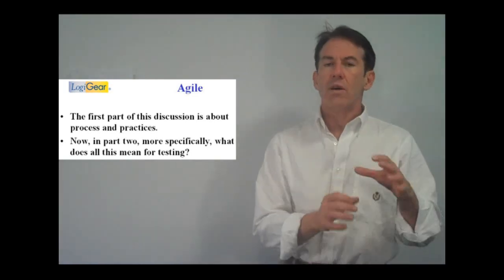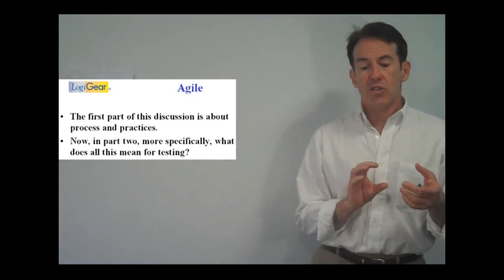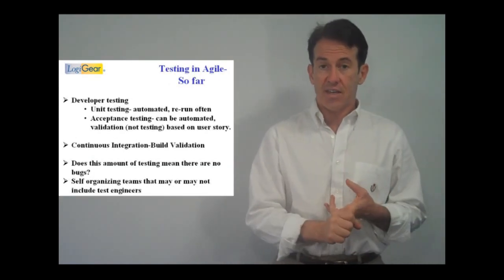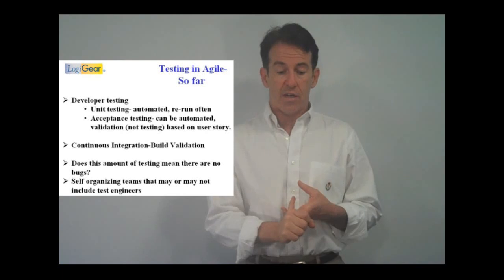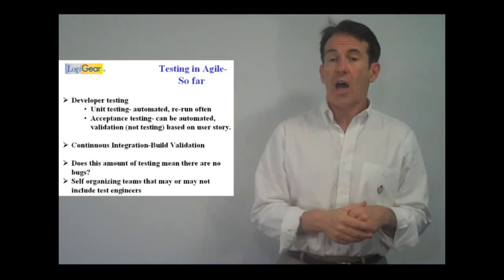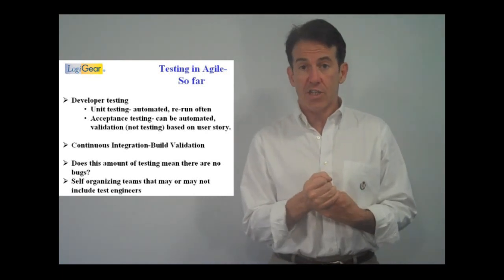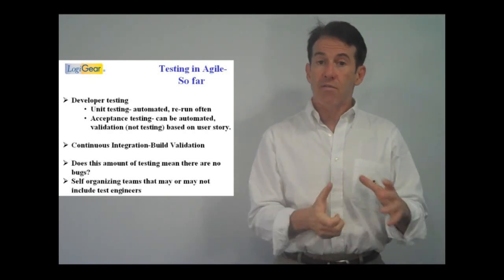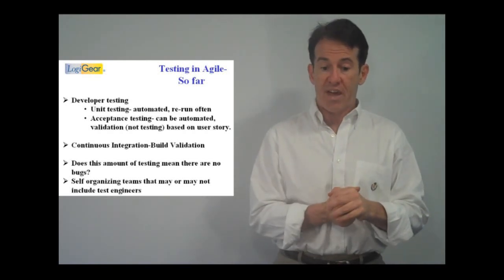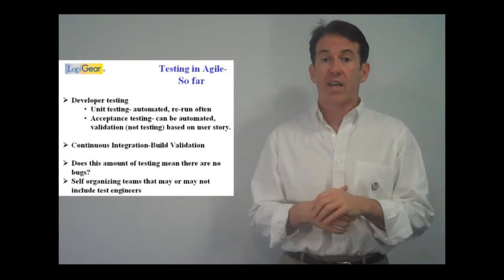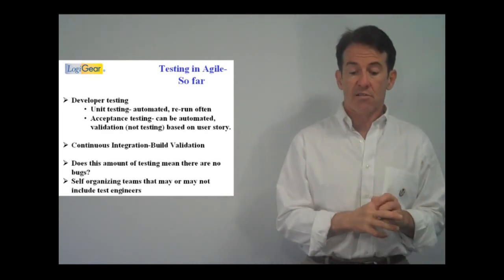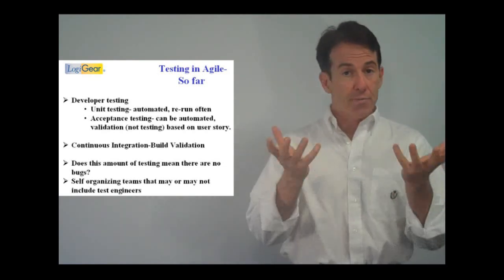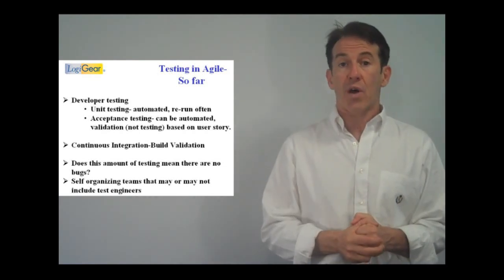So what we know so far about testing is that we have developer testing, that is unit testing, and that we have user story validation testing. I hope you also have continuous integration, that you have an automated build process and a re-running of the unit tests and re-running of whatever automation you have. We used to call that build validation, but whatever you have in the continuous integration process. That's great. Those things are really good and they're really going to help improve the quality of the delivered product pretty fast.